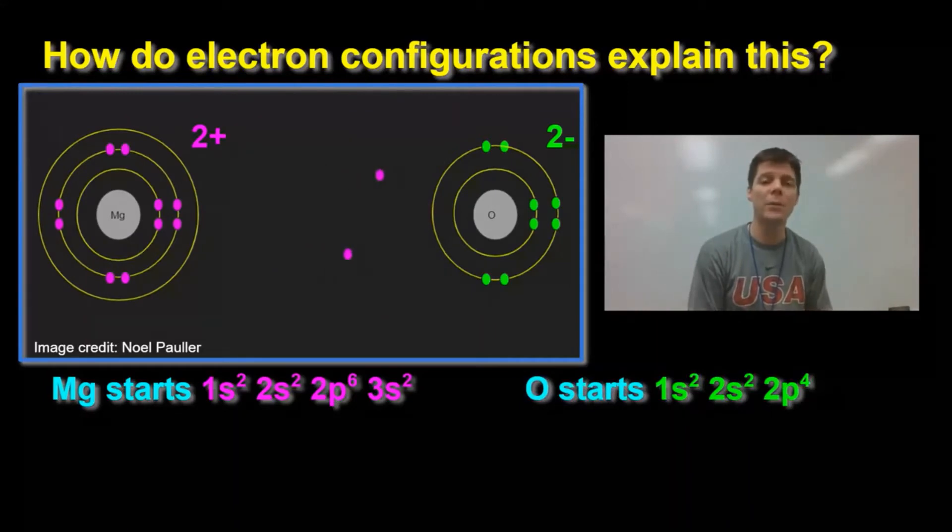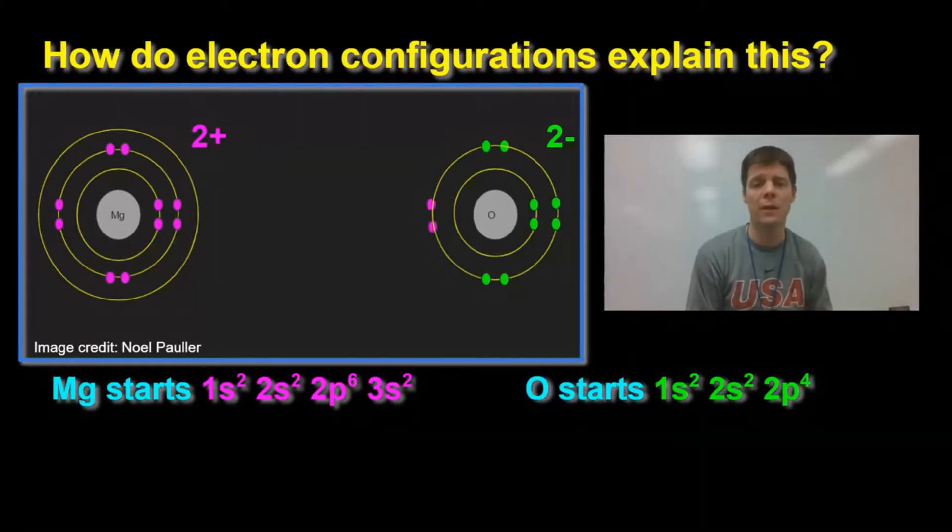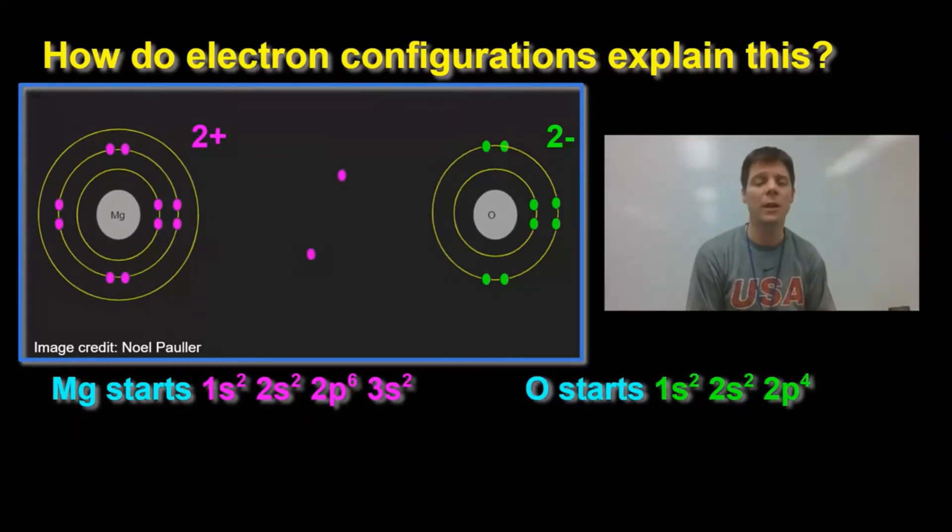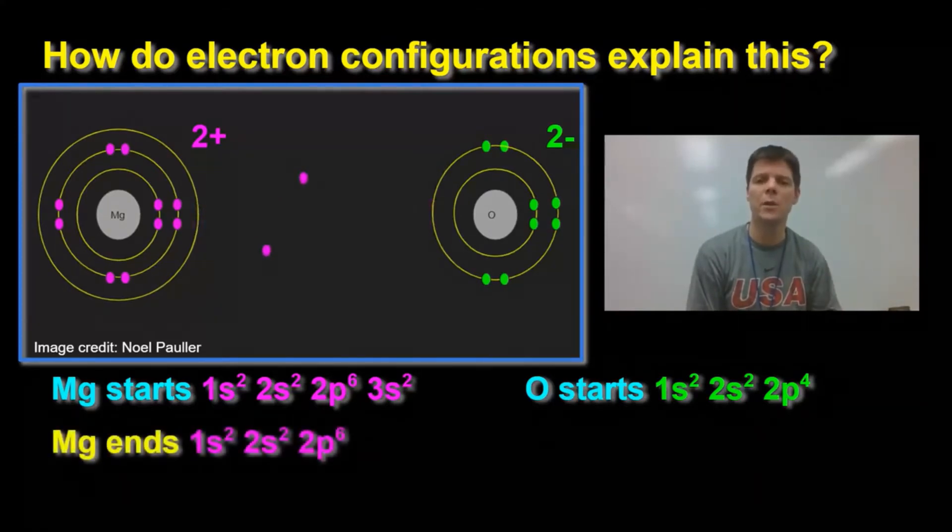Now, when the magnesium atoms lose the two valence electrons, they change their electron configuration to 1s2, 2s2, 2p6. Now the second energy level is completely filled. This makes the magnesium ion plus 2 charge stable.